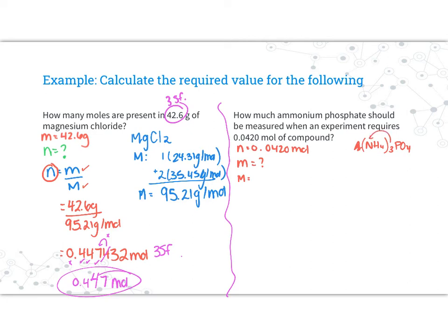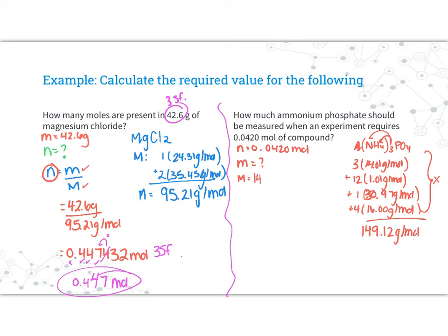There are three nitrogens. Three times 14.01 grams per mole plus 12 hydrogens plus one phosphorus, 30.97, and four oxygens. Now, a lot of you are going to ask, do I need to show this work all the time? No. I'm just showing my work so that we can get familiar with how to calculate molar mass. In the end, really all you need to do is write out the calculated molar mass. I get a molar mass of 149.12 grams per mole.